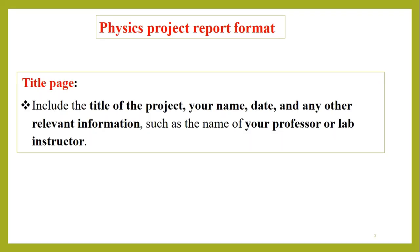Here is a basic format. This is a title page we have to keep. On the title page, on the top corner, we have to write the project title, then your name, hall ticket number, section, branch, college name, mentor, and everything. That is a title page.